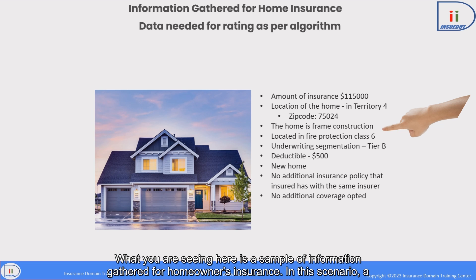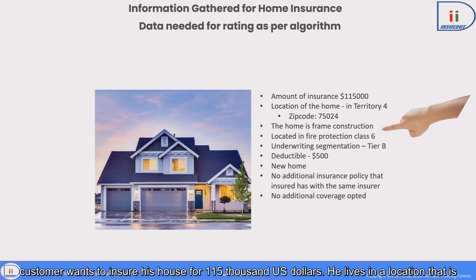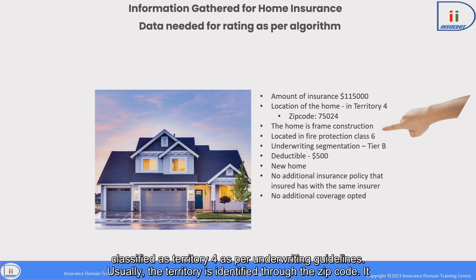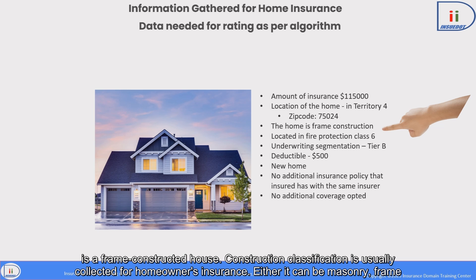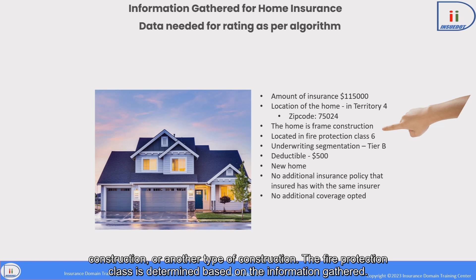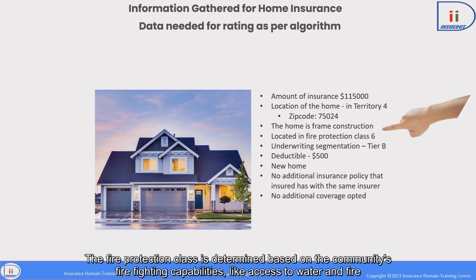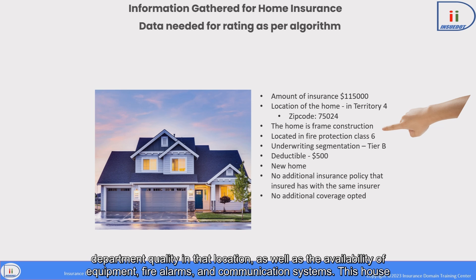In this scenario, a customer wants to insure his house for $115,000 US dollars. He lives in a location classified as Territory 4, as per underwriting guidelines — usually the territory is identified through the zip code. It is a frame-constructed house; construction classification is usually collected for homeowners insurance. It can be masonry, frame construction, or another type. The fire protection class is determined based on the community's firefighting capabilities like access to water, fire department quality, availability of equipment, fire alarms, and communication systems.